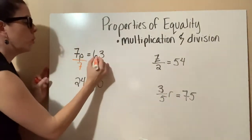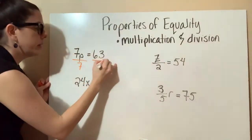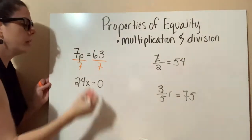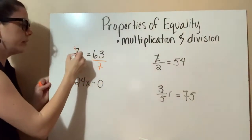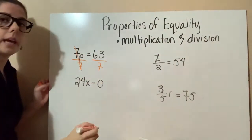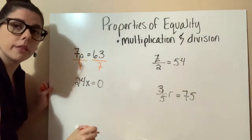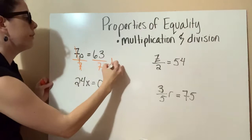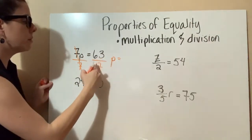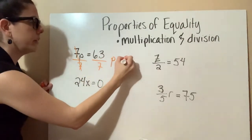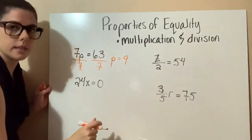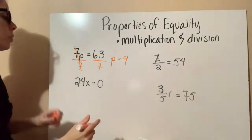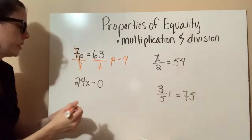Whatever we do to one side of the equal sign, we do to the other. The 7s cancel out on the left, and we have p equals 63 divided by 7, which is 9. So p equals 9.